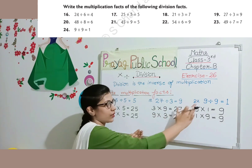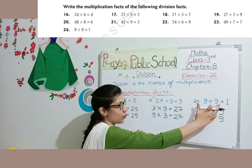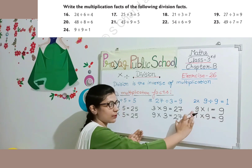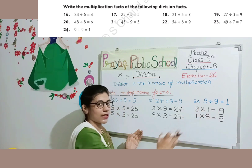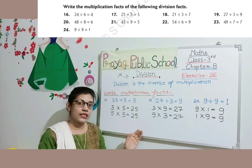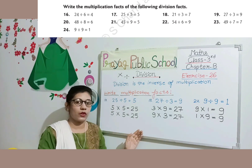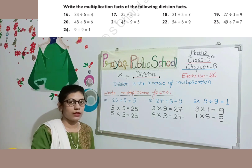Next: 9 divided by 9 is equal to 1. The multiplication facts are: 9 times 1 is 9, and 1 times 9 is 9.